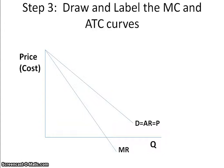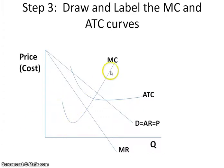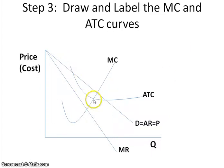Step 3: Draw and label the marginal cost and the average total cost curves. Your marginal cost curve looks like the Nike swoosh — it first comes down with increasing returns and then goes up with diminishing returns. Your ATC is U-shaped, with minimum ATC at the intersection of the marginal cost curve. A helpful tip is to start drawing your ATC where it hits the marginal cost curve, then extend each side, because you will be marked down on an FRQ if ATC is not shown at its minimum.